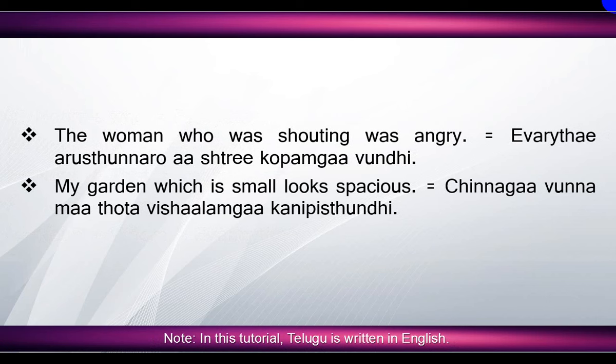'The woman who was shouting was angry' means 'yavarai te arustunnaro a sthri koopam ga undi'. Here, 'woman' means 'sthri', 'who was shouting' means 'yavarai te arustunnaro', 'was angry' means 'koopam ga undi'. 'Was' means 'undi', 'angry' means 'koopam', but since it's an adjective we add 'ga' suffix after koopam, so 'angry' means 'koopam ga'.